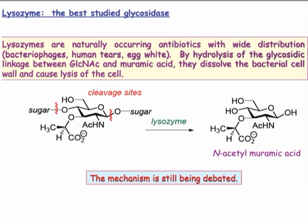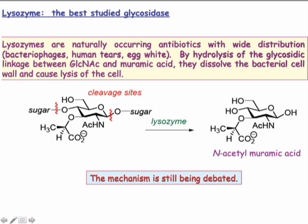First, let's examine the behavior and products of a commonly studied glycosidase, lysozyme. Lysozyme attacks bacterial cell walls and initiates cell death by cleaving polysaccharides at glucosamines, which contain amine groups, where we see hydroxyl groups in ordinary sugars.